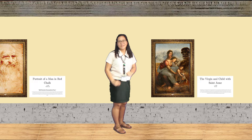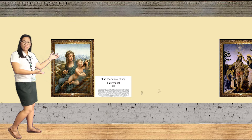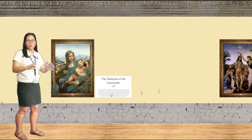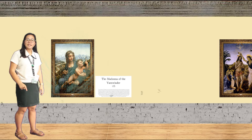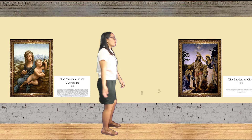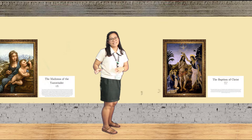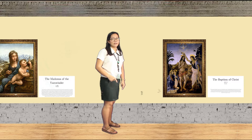The next painting is the Madonna of the Yarn Winder. The medium used is oil on walnuts. The composition shows the Christ child twisting his body away from his mother's embrace. The next painting is the Baptism of Jesus. The medium used is oil on wood. The picture depicts the baptism of Jesus by John the Baptist as recorded in the Bible.